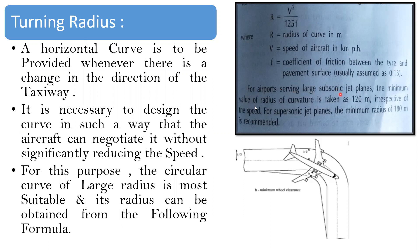For airports serving large subsonic jet planes, the minimum radius of curvature is taken as 120 meters, irrespective of speed. For supersonic jet planes, a minimum radius of 180 meters is recommended. Even if the formula gives a value less than 180 meters for supersonic, the minimum of 180 meters must still be adopted.